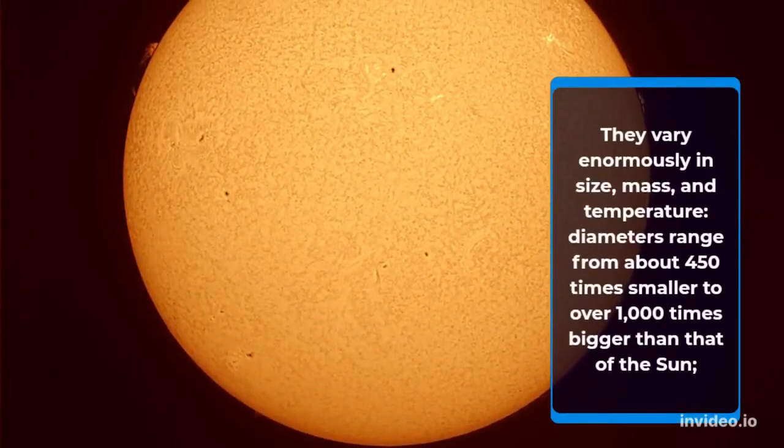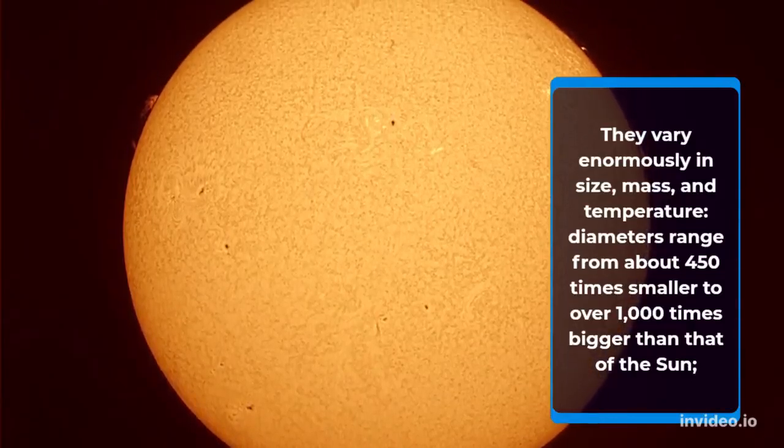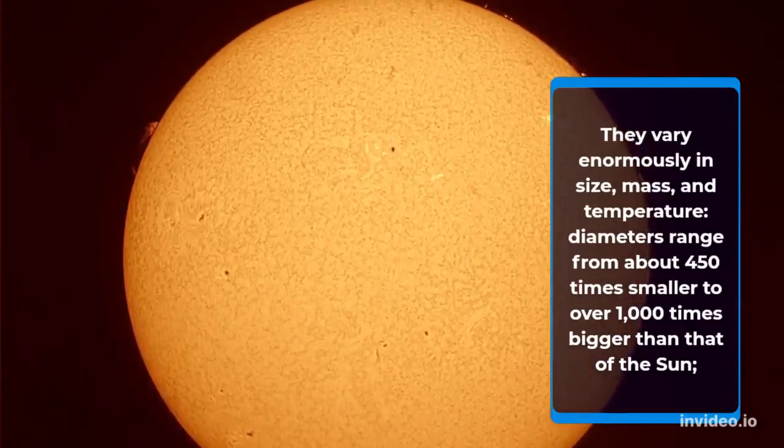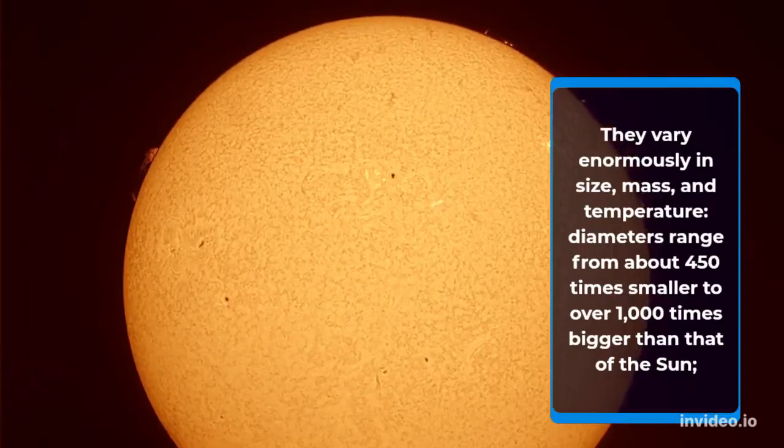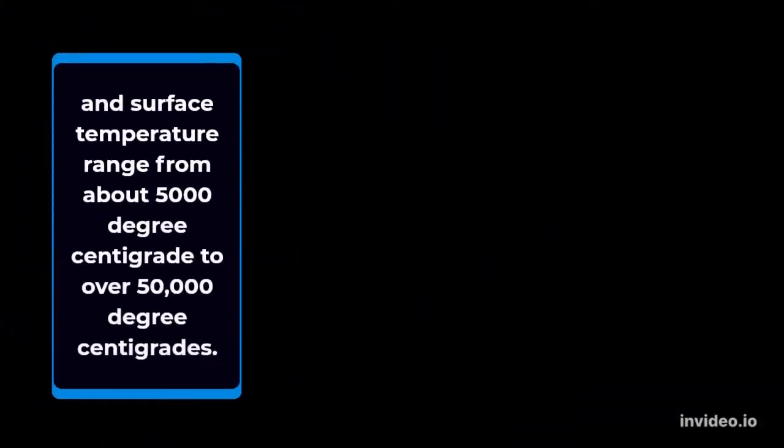They vary enormously in size, mass, and temperature. Diameters range from about 450 times smaller to over 1,000 times bigger than that of the Sun. Masses range from about a 20th to over 50 solar masses, and surface temperature range from about 5,000 degrees centigrade to over 50,000 degrees centigrade.